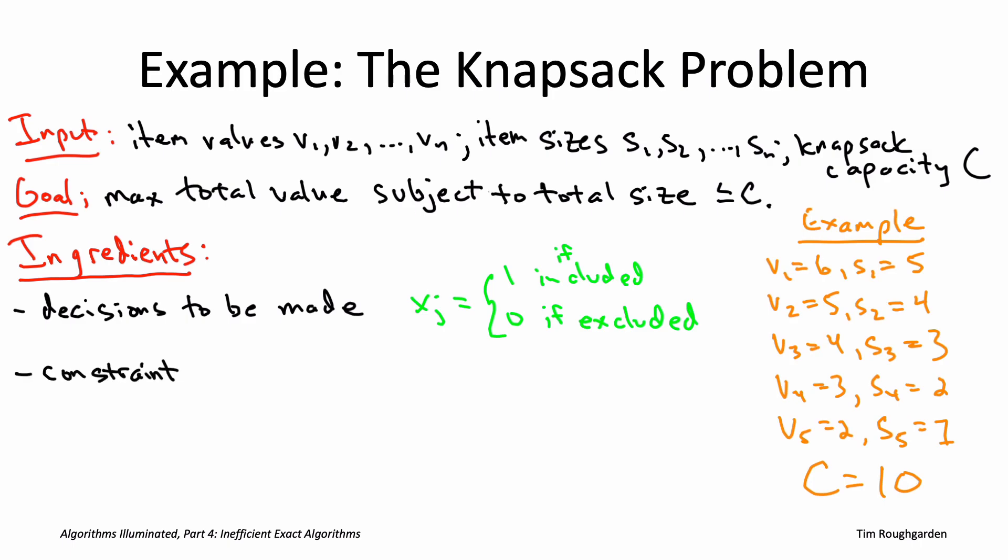Second, the constraints. In the knapsack problem, there's only the one constraint, saying the sum of the chosen items' sizes should be at most capital C. That constraint is very easy to express in arithmetic in terms of these decision variables, these xi's, that we've introduced.